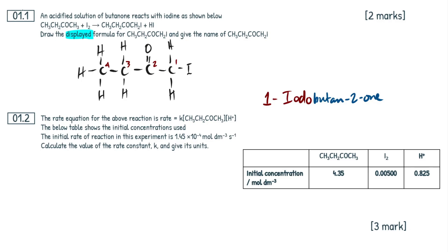So that'll be our first two marks: one mark for the displayed formula and one mark for the name. One thing to keep in mind: in the mark scheme, specifying the position of the ketone functional group is in brackets, meaning you don't strictly need to write it. I would personally stick it in every time just in case. If you just put '1-iodobutanone' you'd be completely fine in this case.